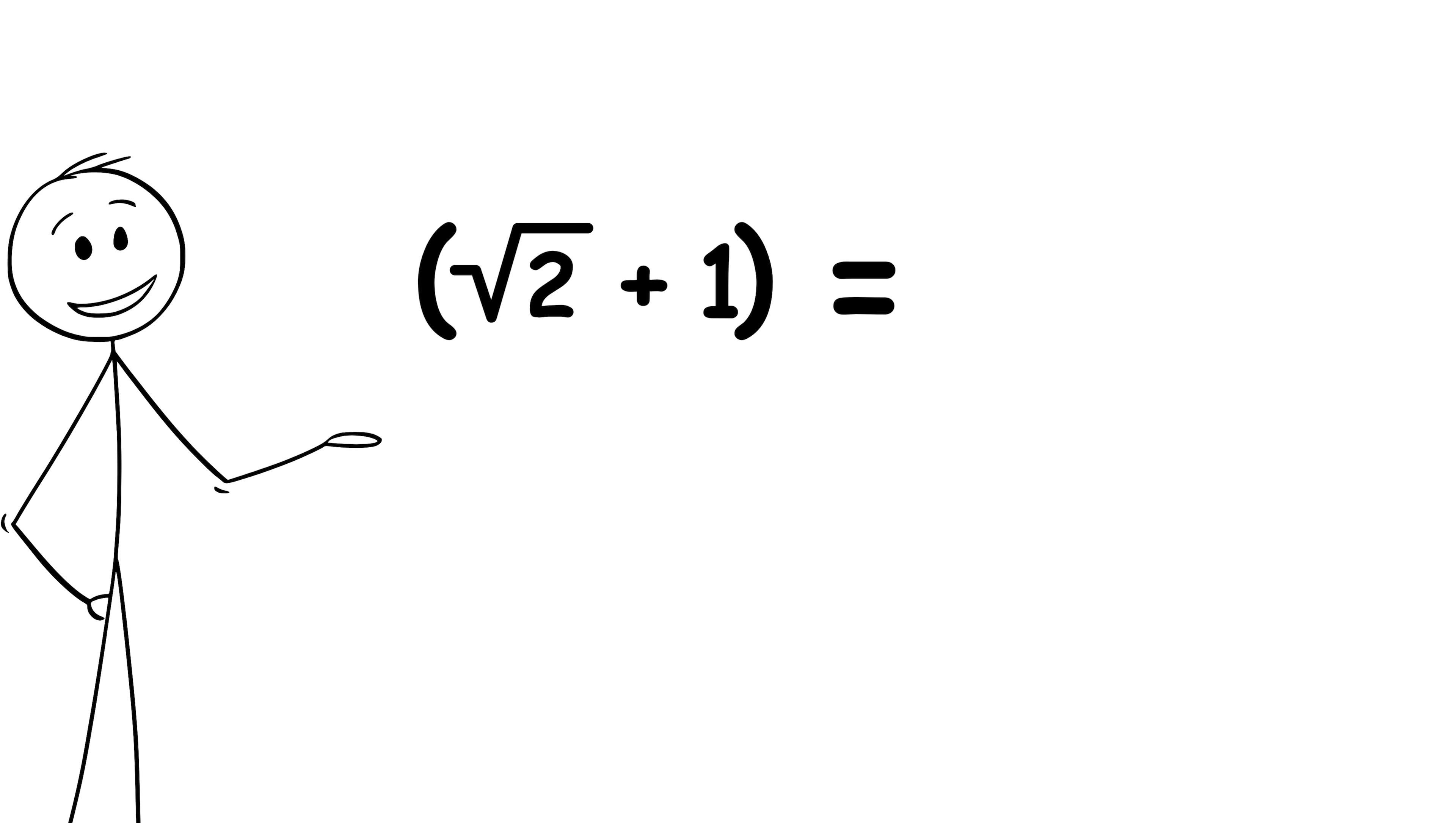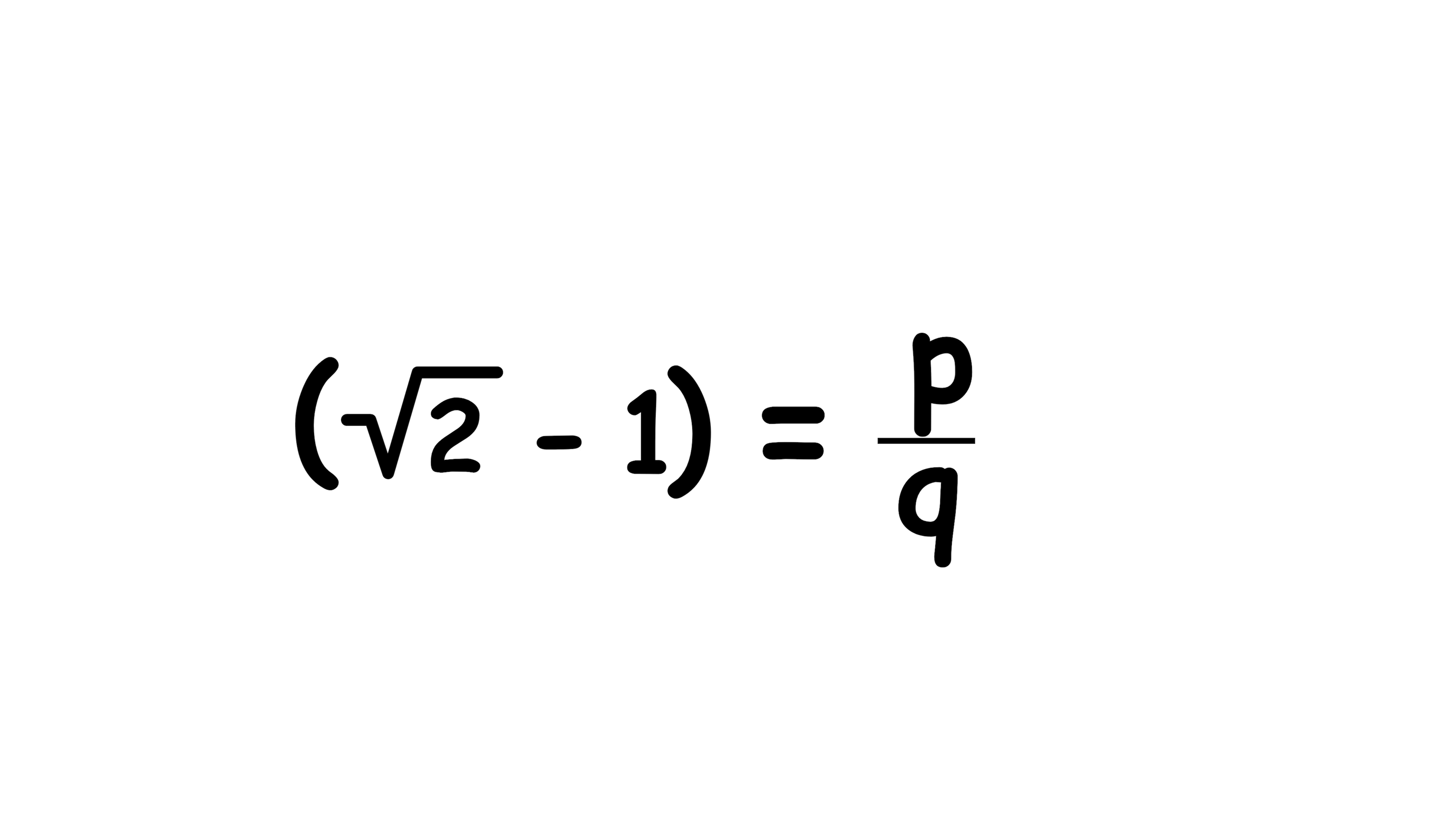We know that square root 2 plus 1 is q over p, so square root 2 minus 1 must be the reciprocal, p over q.